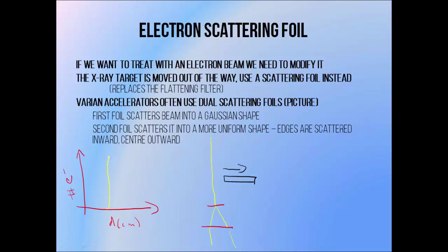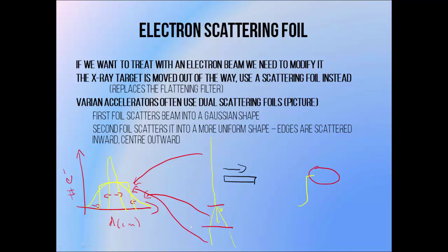If you look at the profile across the pencil beam — the number of electrons versus distance across the beam — it is quite narrow. Hitting the first scattering foil spreads it out significantly into a Gaussian shape or normal distribution, because electrons are more likely to be scattered a little bit than a lot. The job of the second foil is to generate a more uniform profile by scattering electrons from the edges into the centre and from the centre towards the edges. We like to have flat beams because it means we can give a fairly high and uniform dose to a target, whereas a Gaussian shaped beam would require giving a lot of extra dose to the surrounding tissue to achieve the same minimum dose inside the target.